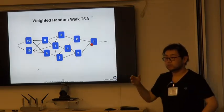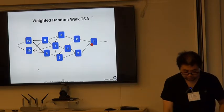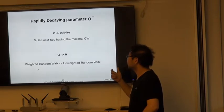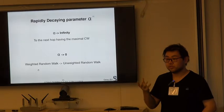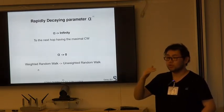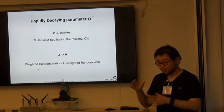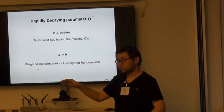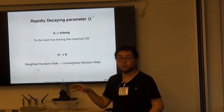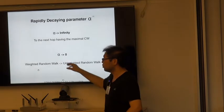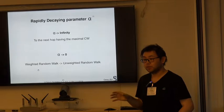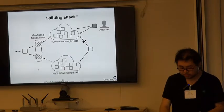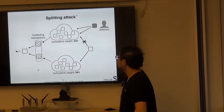For example, if a random walk begins from the transaction with cumulative weight equal to 10, the next hop could be the one with cumulative weight of 8 or 6. As 6 is smaller than 8, it is more likely to go to 8, and so on, until it reaches a tip which is chosen as one of the parents. There is a parameter alpha. Alpha decides the sensitivity of the random walk to the cumulative weight difference between possible next hops. If alpha is very big, the random walk will almost always go to the next hop with the highest cumulative weight. If alpha goes to zero, every possible next hop has equal probability. And this parameter alpha plays a very important role in the splitting attack.